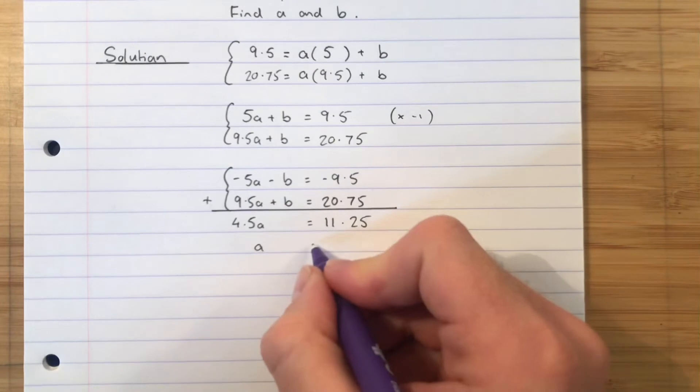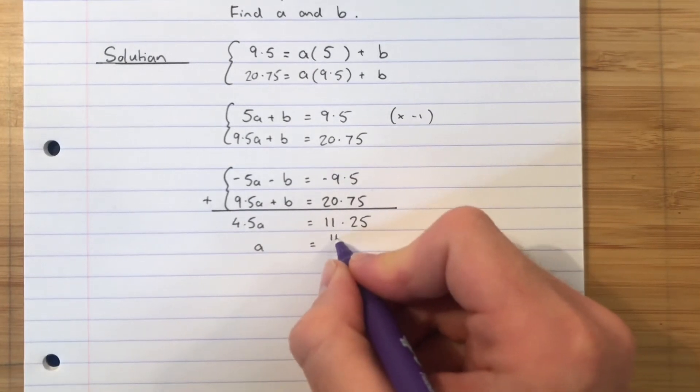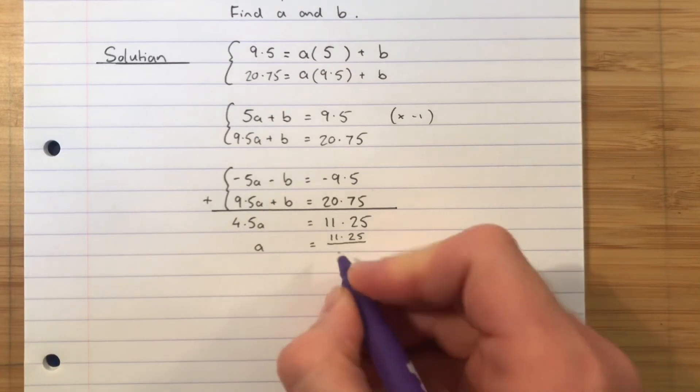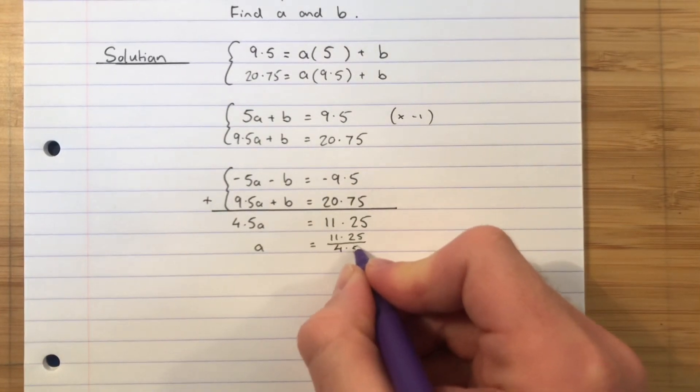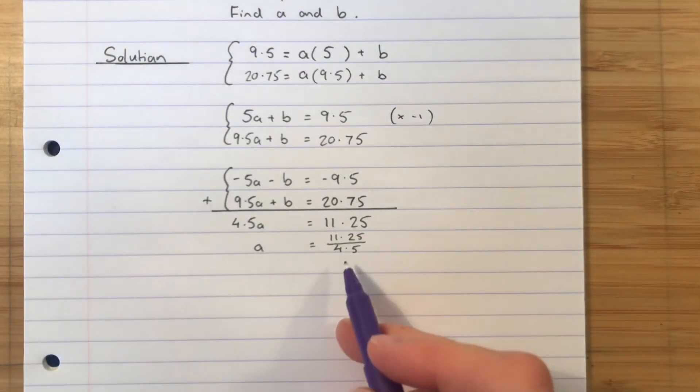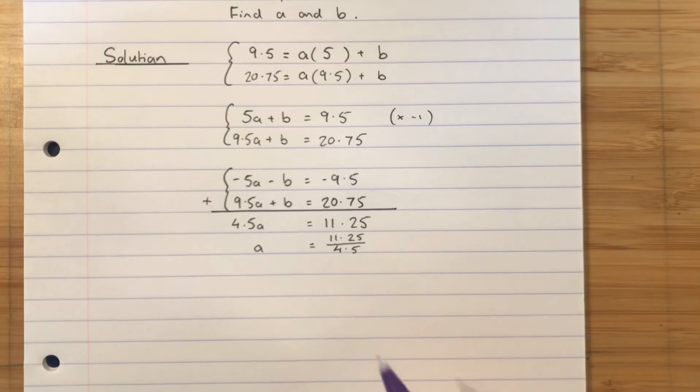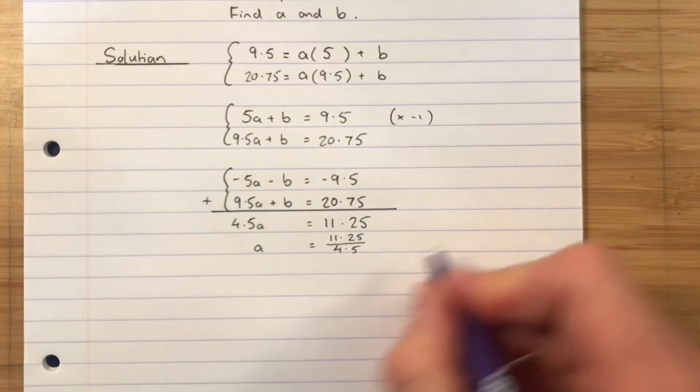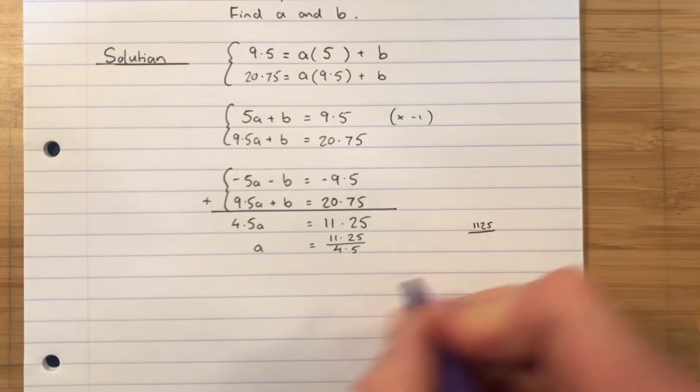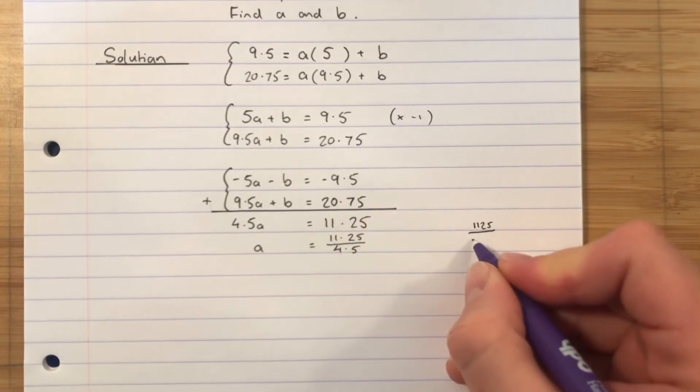So to get my value of A, I am going to divide the 4.5 down underneath that 11.25. So we can fire that in a calculator. Alternatively, I can actually just see what the answer is. I can see that that goes in there two and a half times. Let's say we didn't have a calculator. Well, let's just do this. Times the top by 100 and times the bottom by 100. So move the decimal point twice. 1125 over 450.